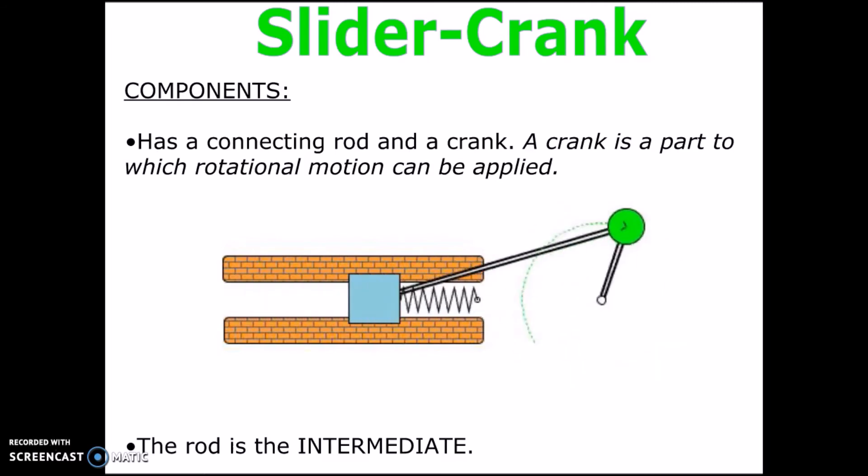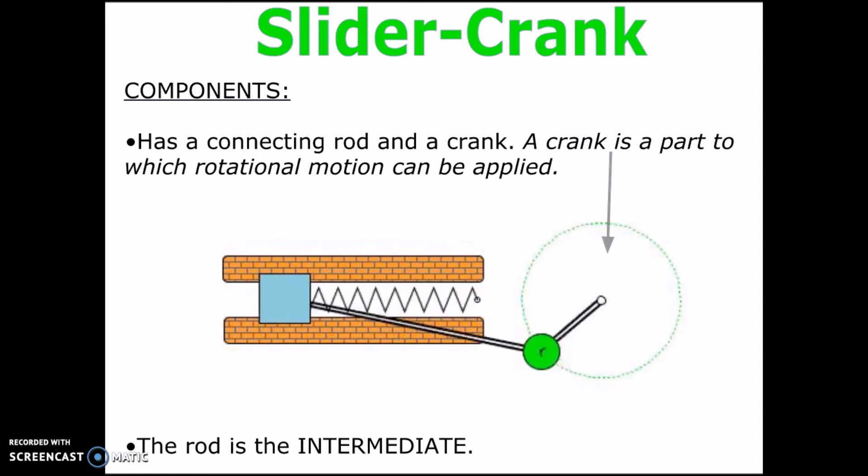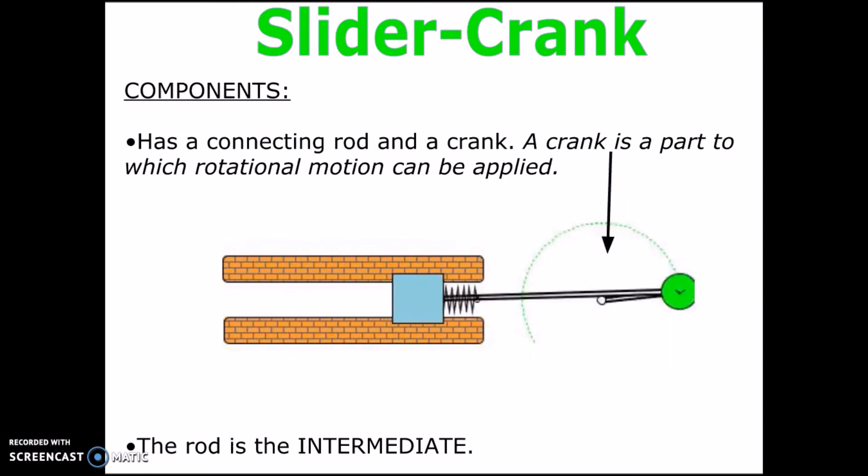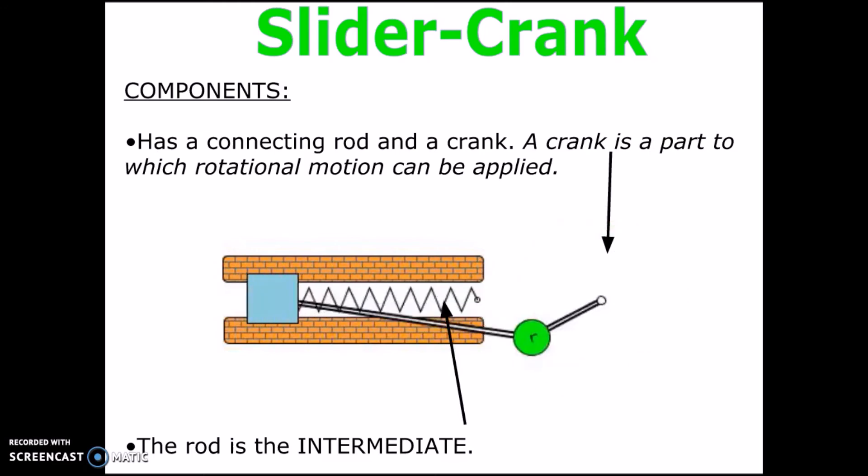The crank is a part to which rotational motion can be applied, and the rod is the intermediate. The rod connects the crank to another object that moves it translationally.